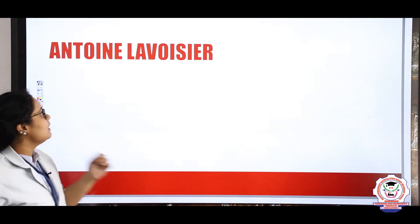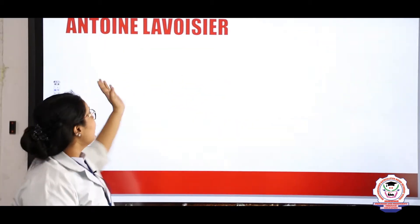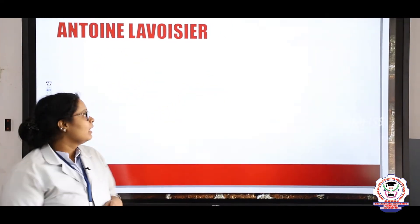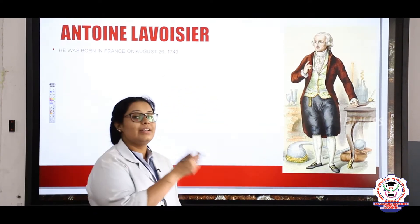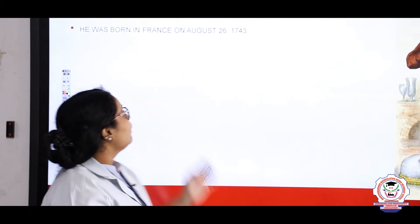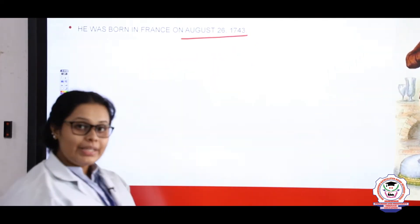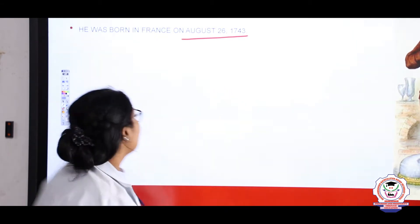Now let's talk about the second person, Antoine Lavoisier. You can see him here. He was born on 26th August 1743 in France, and he was younger than Henry Cavendish, the first person we discussed.